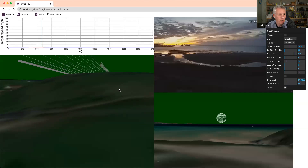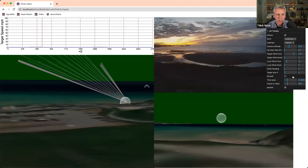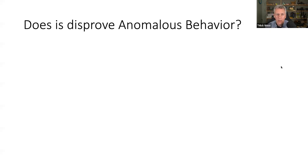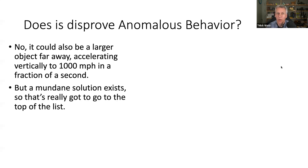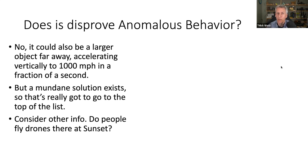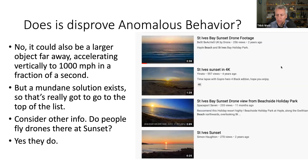When the object is about a mile away, it's moving at about 100 miles per hour upward — very impressive. But as it gets closer, it slows down significantly. A very reasonable solution for this case is that it's something drone-sized just over the beach. This doesn't disprove anomalous behavior — a mundane explanation doesn't eliminate other possibilities — but whenever a mundane solution exists, it gravitates to the top of the list. And other data supports this: it's a very popular place for flying drones at sunset.